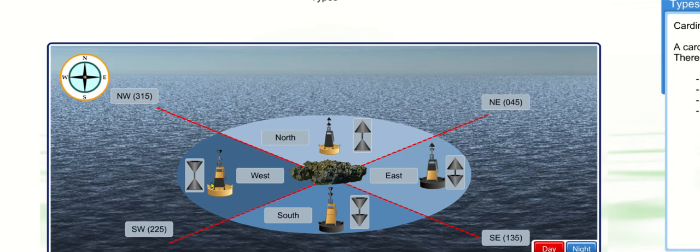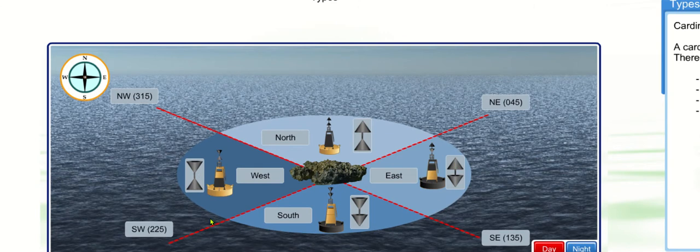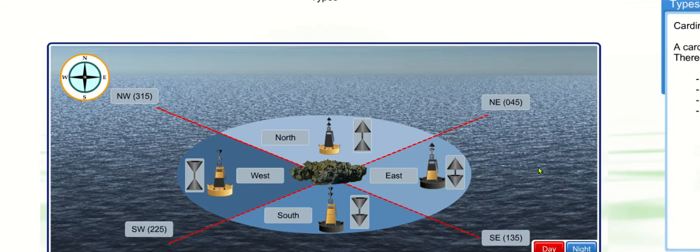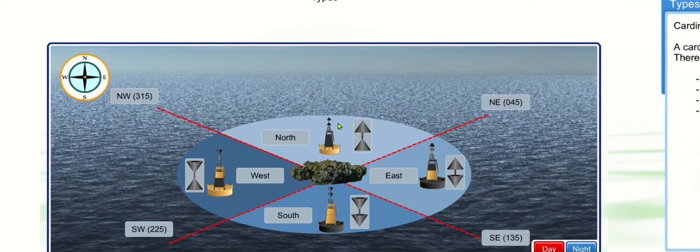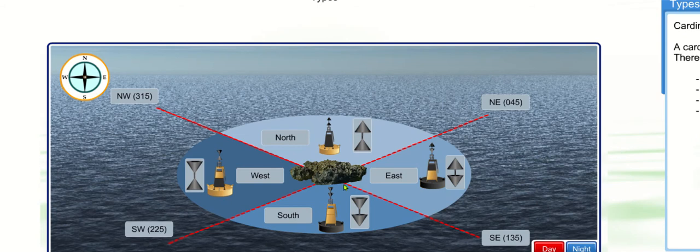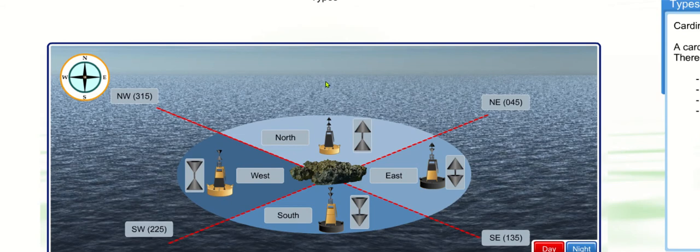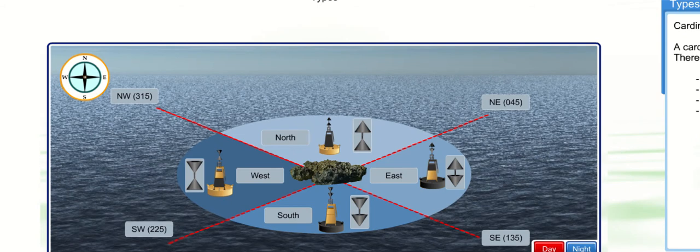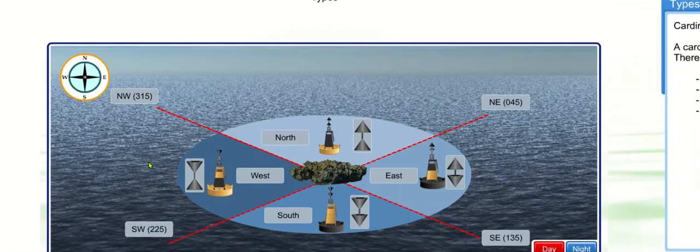And if we turn the wine glass on its side it looks like a W. So those are one of the areas that we're looking for, and each of them mark the safe area. So I must pass to the north, or I must pass to the east, or I must pass to the south, or I must pass to the west.